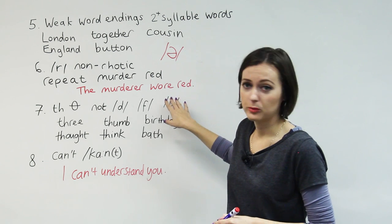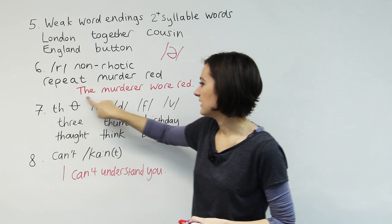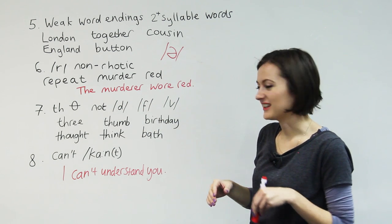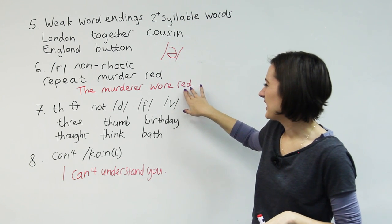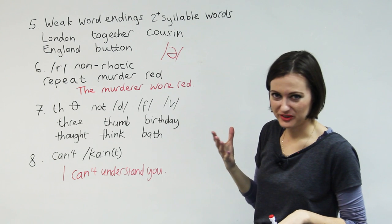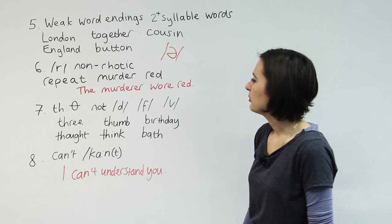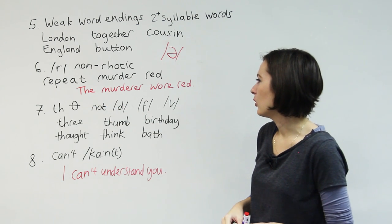And in some dialects, for example, in Scottish, you do hear it. So I'm going to say the sentence in the Scottish accent: the murderer wore red. Sorry, Scottish people. But they put the R sound in. Oh, I kind of did it then. Maybe I can do it after all.